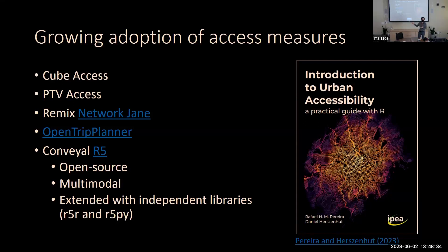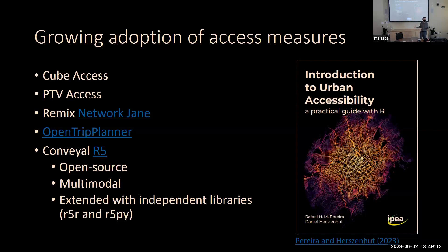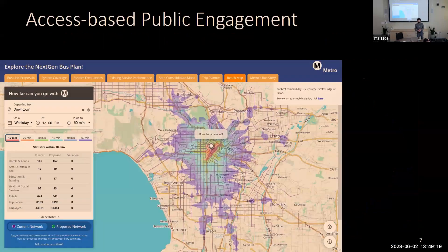One key enabler has been the open source approach and sharing of innovation. R5 has been extended by independent parties — if you prefer using R, there's R5R; if you prefer Python, there's R5py. There's been a great project in Brazil to calculate detailed multimodal access metrics for every city, led by the Brazilian national statistics economics agency. Rafael Carreira and Dan Hartzenfoot are two leaders of that work. They put out a great ebook on how to calculate these metrics using open source software like R5R.